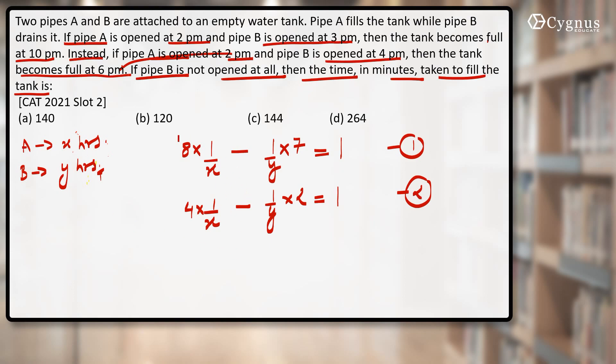So let's try to eliminate y from here. This equation will be multiplied by 2 and I'll multiply this equation by 7. After that I'll subtract: second equation minus first equation. Now this gives you 28/x minus 2 × 8 is 16, so 28/x - 16/x will give you 12/x. This is 14/y, this is also 14/y, so that will cancel out. This is equal to 7 - 2, that is equal to 5. So what's the value of x?